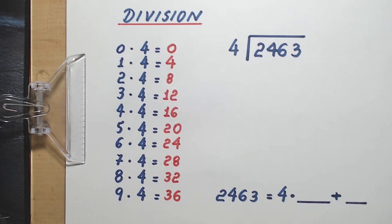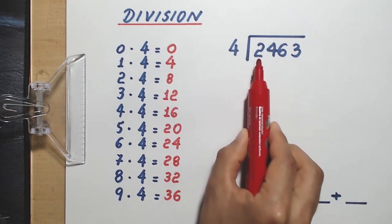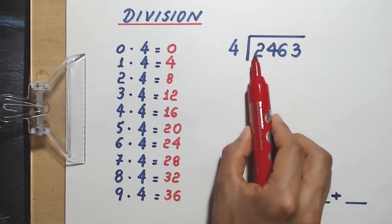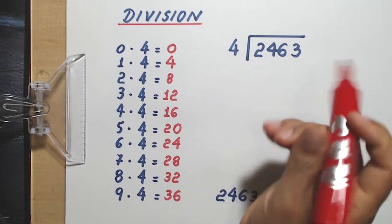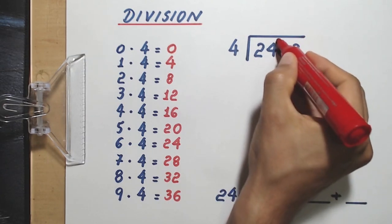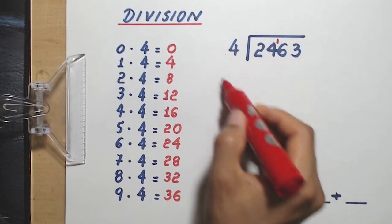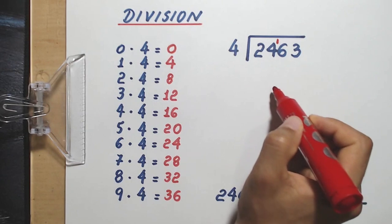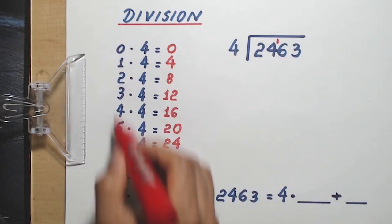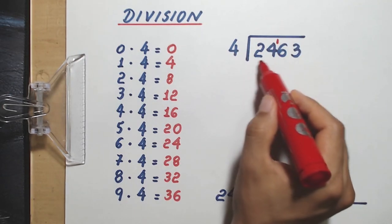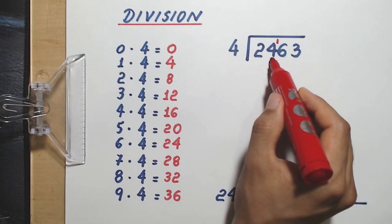Okay, so let's get started. We start by looking at this first digit. Since 2 is less than 4, we need another digit. Now we have 24, and 24 is more than 4, so we can start. We ask the question, how many times does 4 go into 24 without going over? Or what number from 0 to 9 do you multiply by 4 to get 24, or almost 24, but not more than 24?